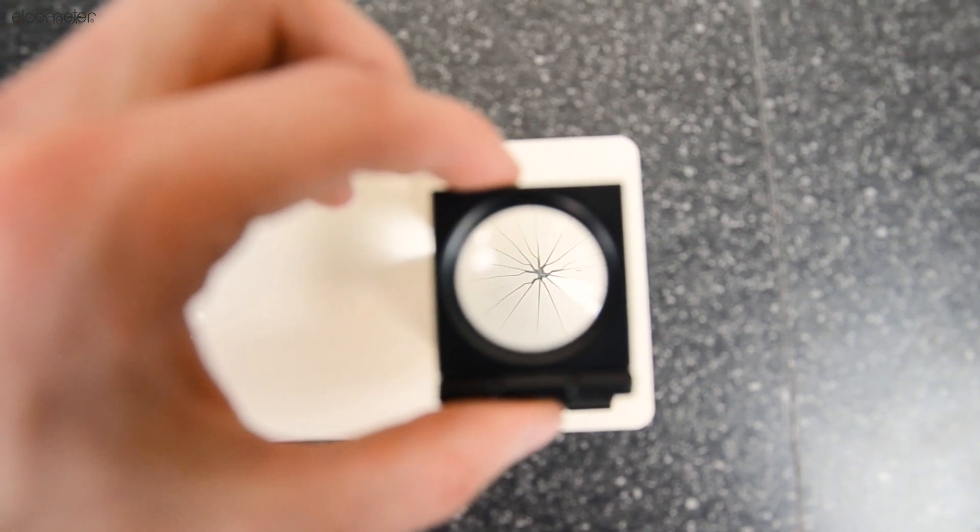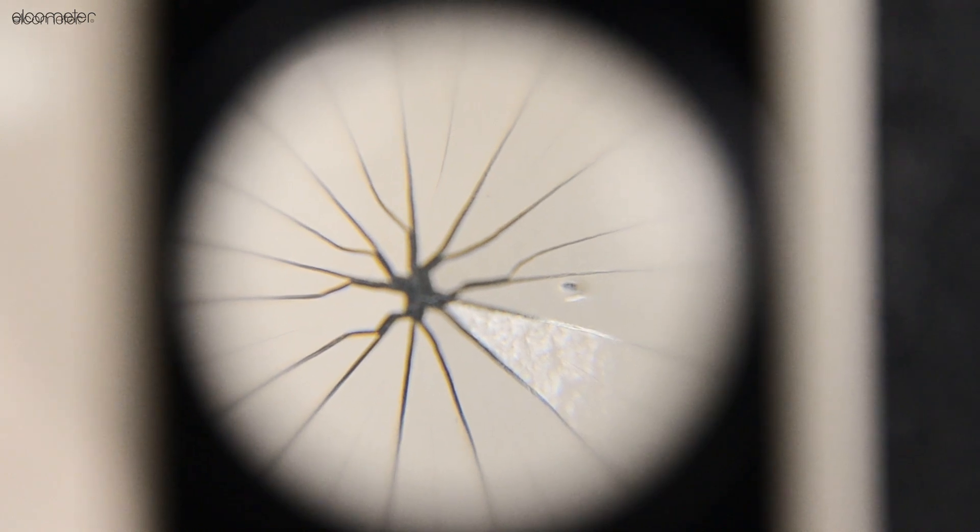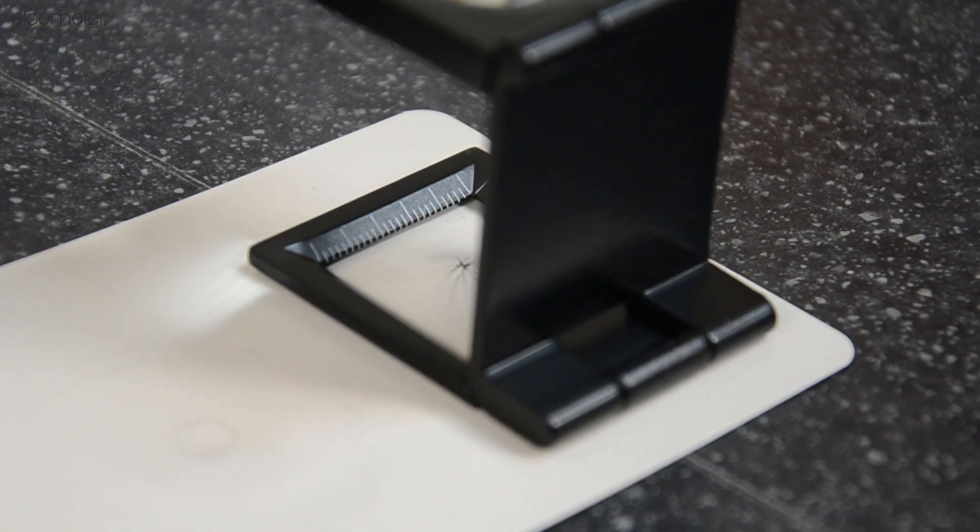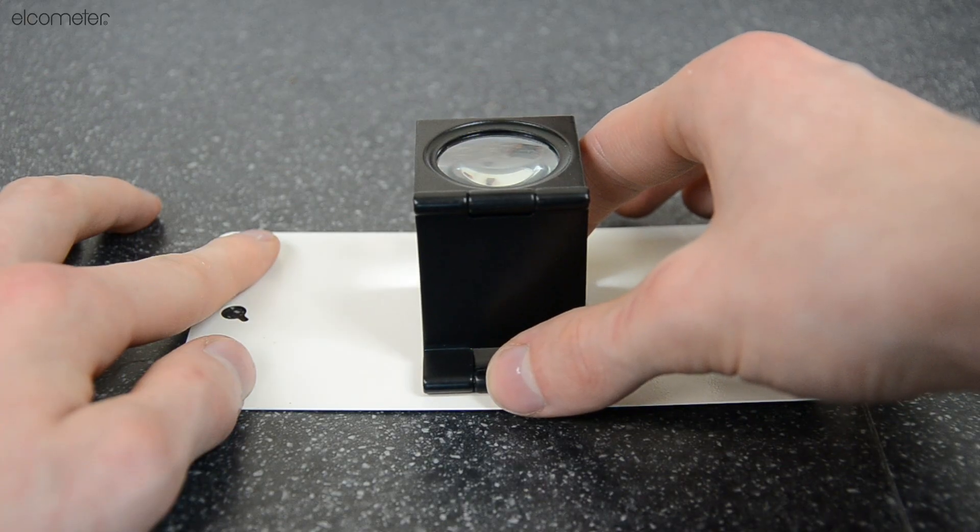The coating can then be inspected using the magnifier supplied to check for elongation, cracking, or peeling of the paint surface.